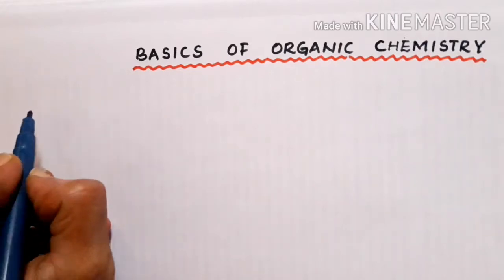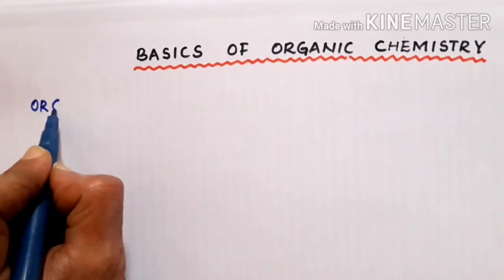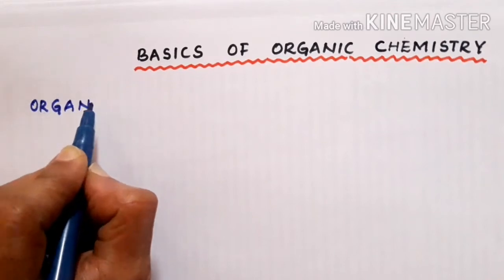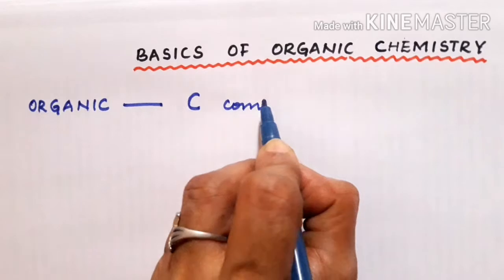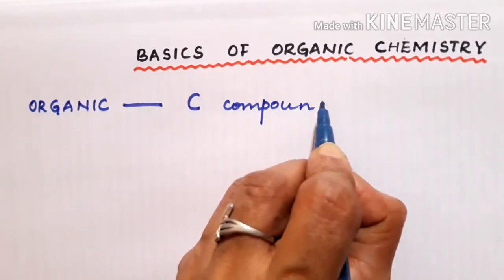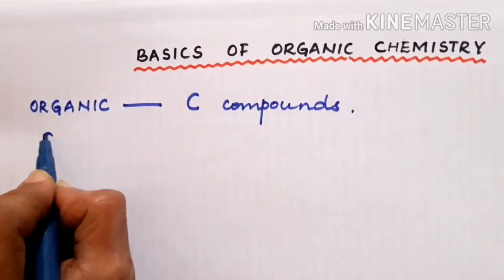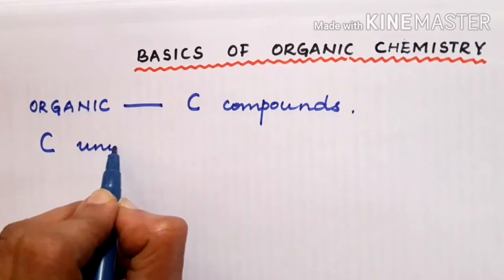What do you understand by organic chemistry? Organic chemistry basically deals with carbon compounds. Why are carbon compounds learned separately? Carbon is unique in nature.